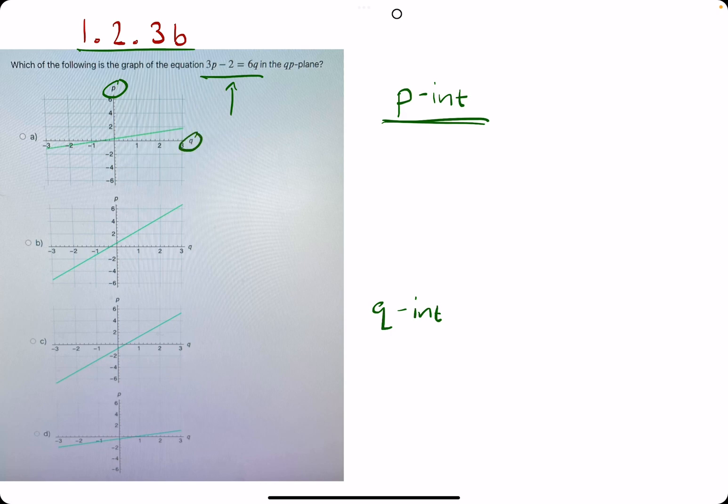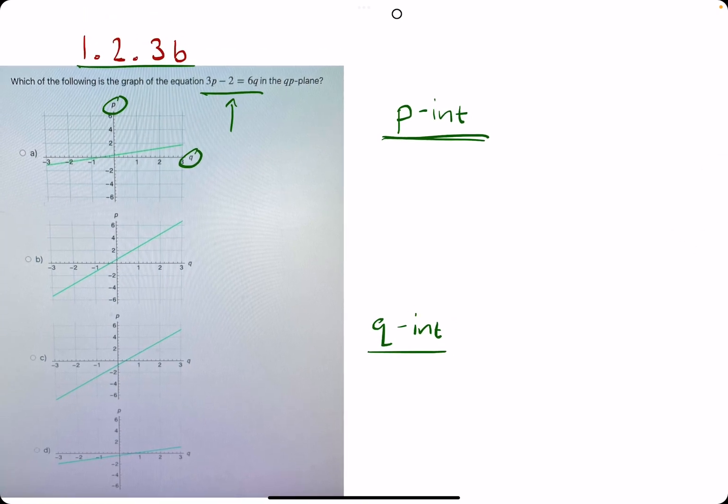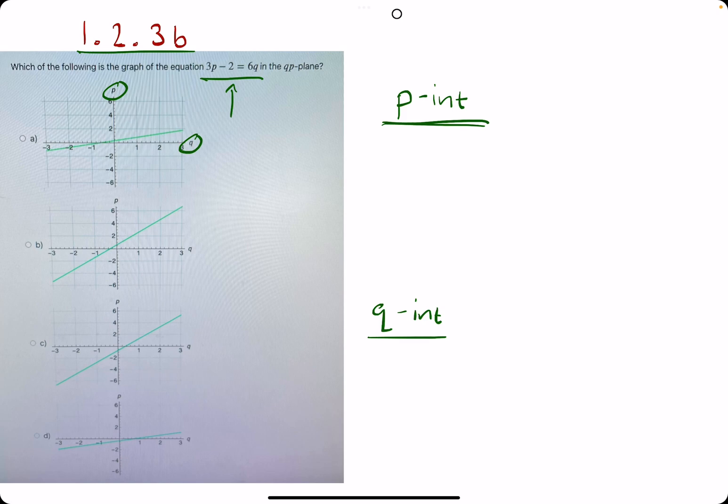Same with the q-axis. The q-axis is like our x-axis, so finding the q-intercept is like finding the x-intercept. If we can find these two intercepts, we can find our correct graph.